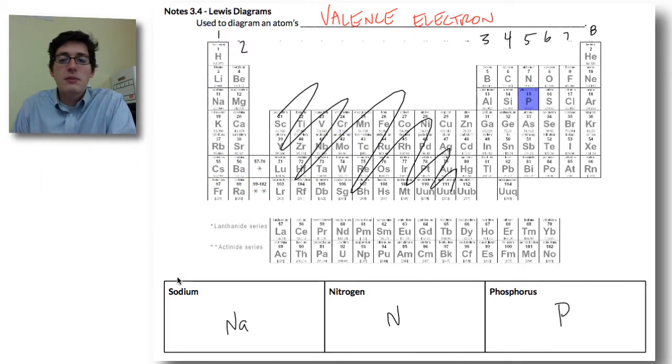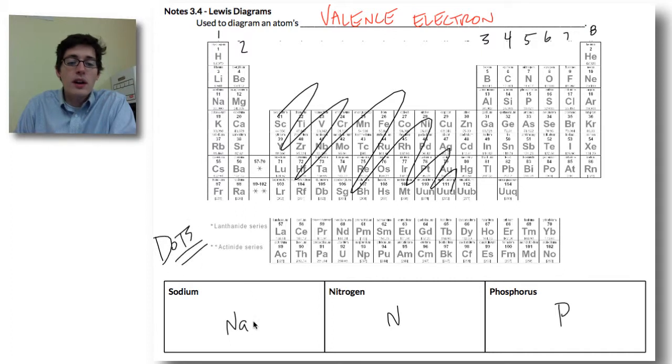So we've got three different atoms across the periodic table, and we're going to show our valence electrons, and we use these using dots. So we just show dots around our element symbol to show the valence electron.